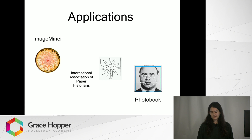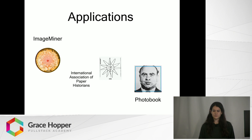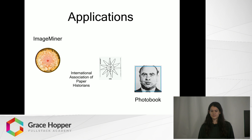They also extract shapes from the inputted image and then compare the shapes from that image to shapes in all the other images across the database. The measure they use to determine how different a shape is from another is basically the average energy it takes for one shape to be deformed into the other, which is kind of interesting.